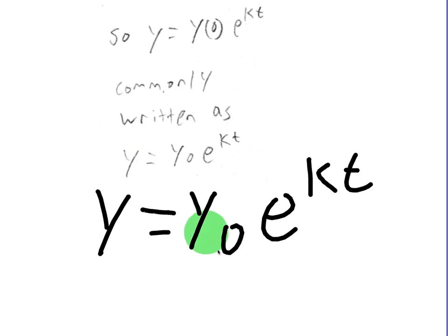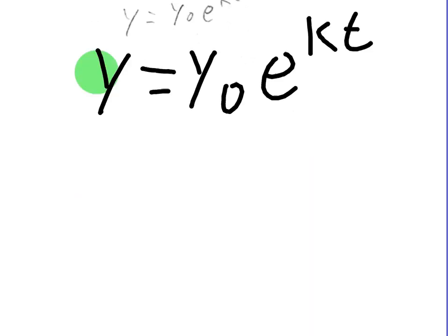Remember, y naught represents the initial value, the initial y value. k represents the growth factor, and y represents the amount at a given particular point in time. Remember that this is basically the same. This is the same as the compound interest formula. It's derived the same way, where the amount in the account is equal to the principal, or how much you put into the account,